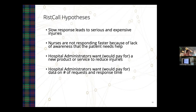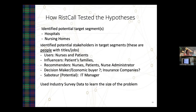His hypotheses were: slow response leads to serious and expensive injuries; nurses are not responding faster because of lack of awareness; hospital administrators want to and would pay for a new product or service to reduce these injuries; and hospital administrators would pay for data on number of requests and response time. Target segments were hospitals and nursing homes. Stakeholders included nurses, patients, and potentially insurance companies. A potential saboteur was the IT department, since they don't like putting in new systems.